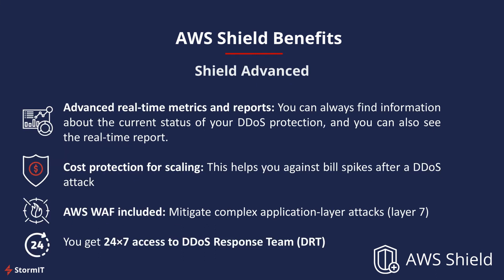For Shield Advanced, the benefits include access to real-time metrics and reports where you can find information about the current status of your DDoS protection, and you can leverage AWS CloudWatch metrics and attack diagnostics. Shield Advanced also includes protection against bill spikes caused by scaling your infrastructure in reaction to a DDoS attack. It also includes AWS WAF that mitigates complex application layer attacks by setting up rules, and you get 24x7 access to the DDoS Response Team for help and custom mitigation techniques during attacks.